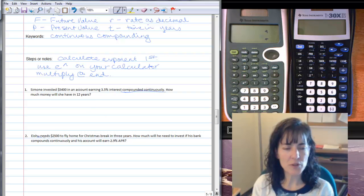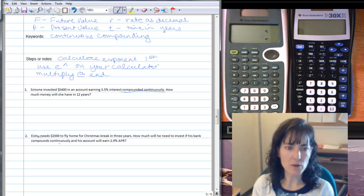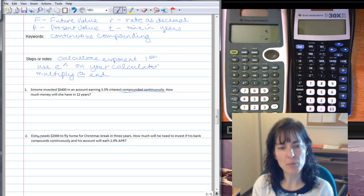Eshoo needs to fly home for Christmas. And he needs $2,500 for his Christmas break in three years. How much will he need to invest if his bank compounds continuously? And his account will earn 2.9% APR.